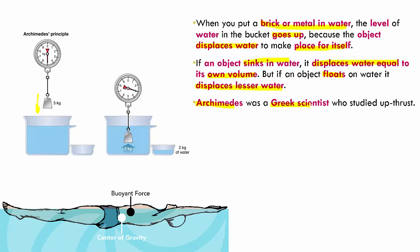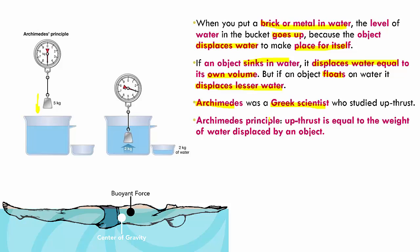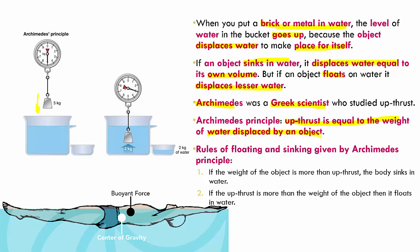Archimedes, a Greek scientist, studied upthrust and how it works. Archimedes' principle states that upthrust is equal to the weight of water displaced by an object. He also gave rules of floating and sinking: if the weight of an object is more than the upthrust, the body will sink in water; whereas if the upthrust is more than the weight of the object, it will float. For example, the upthrust on a human being is more than their weight, so they float, whereas metal is heavier than the upthrust, so it sinks.